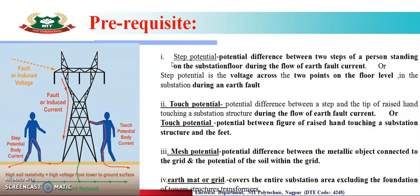हमने इसमें देखा कि step potential मतलब क्या रहता है? जैसे कि आप ये diagram से भी देख सकते हैं, अगर कोई fault आता है, तो क्या होता है? Suppose three phase line है, उसमें से एक phase अगर तूटके हमारे जमीन पे गिर गई, तो वो जहाँ पे गिरी है वो पूरा area एनर्जाइज होता है, और उसके वज़े से वहाँ पे voltage gradient develop होते हैं।